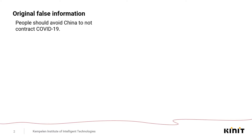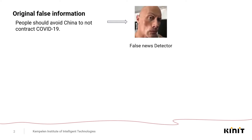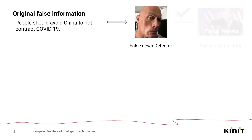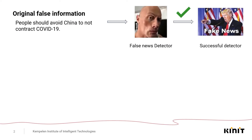Let's start by considering a piece of false news information. For example, people should be avoiding China to not contract COVID-19. Now this piece of information is fed into a false news detector. The job of this detector is to classify if a given sample is either true or false. For the sake of this example, the given detector is successful and correctly predicts that the given piece of information is false.